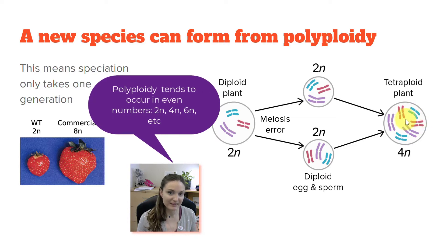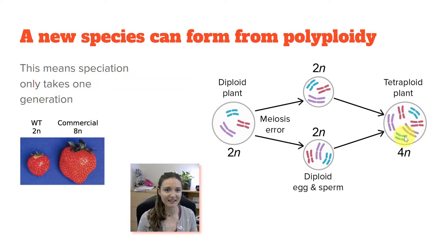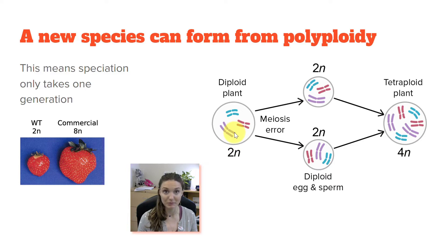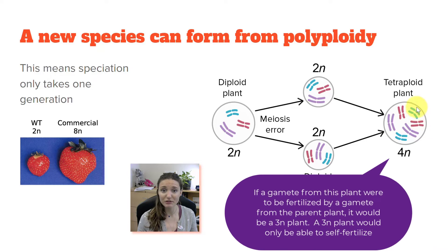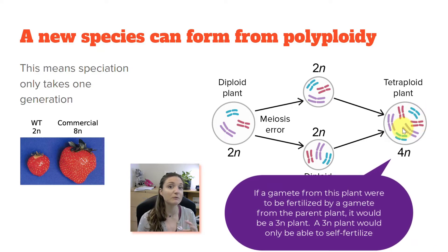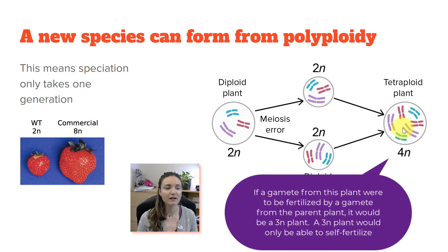This is now a new species, because this tetraploid plant's gametes would not match up with the gametes from the original diploid plant. A prezygotic barrier now exists: any gametes formed by the tetraploid would be diploid, while gametes formed by the original diploid plant would be haploid when it works properly. So we have a brand new plant in one generation — this individual can only breed with itself, which isn't ideal but plants can do that.